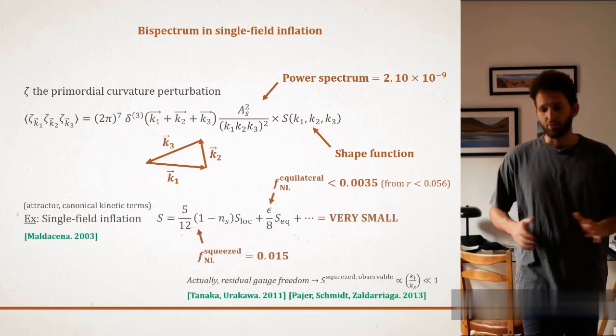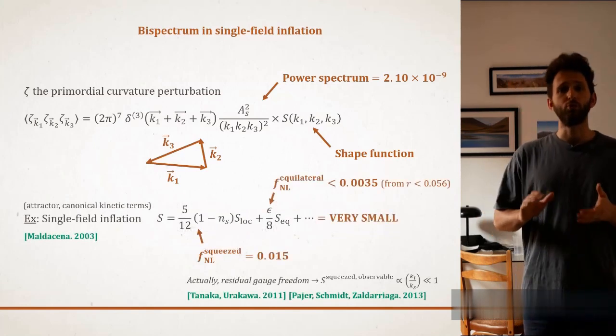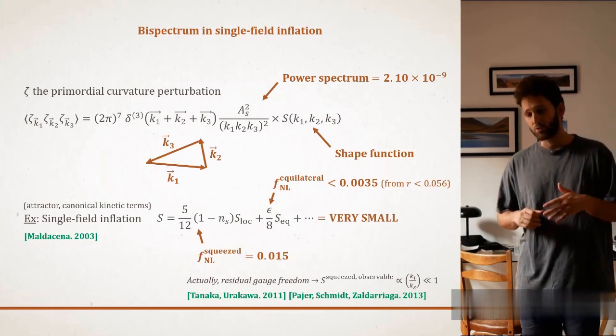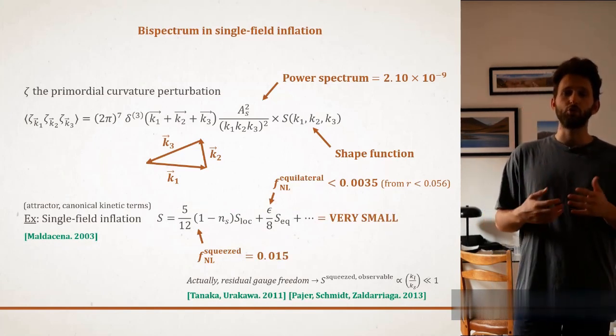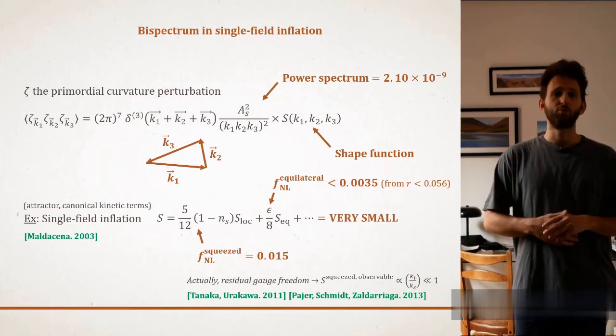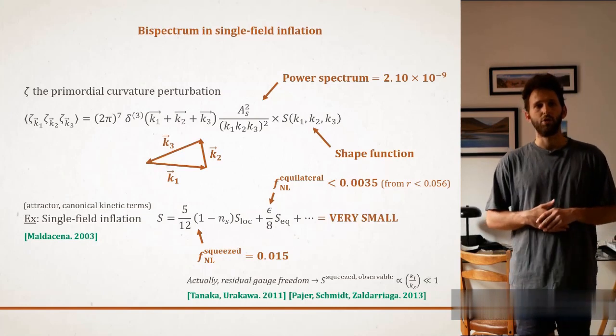Let's take the example of single-field inflation, for which Maldacena was the first one to compute the full shape of the bispectrum. He actually showed that the bispectrum was small, as it was always proportional to the so-called slow-roll parameters of single-field slow-roll inflation, that must be much smaller than one by consistency of the model.